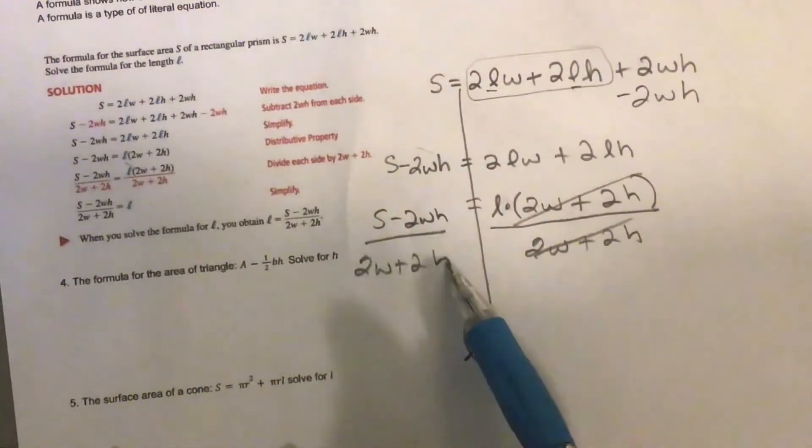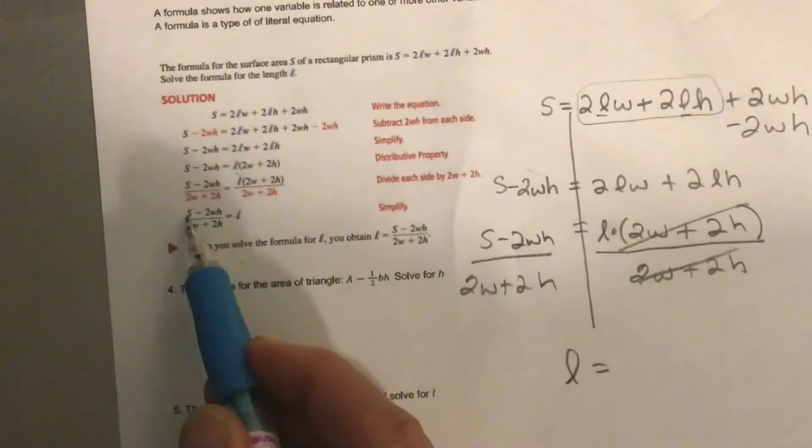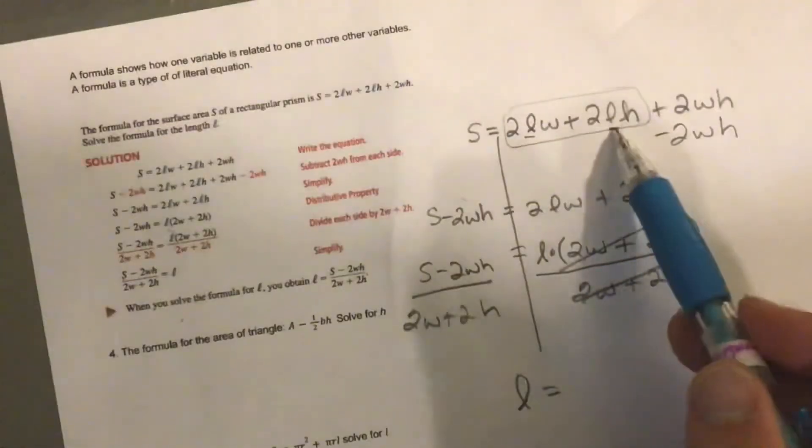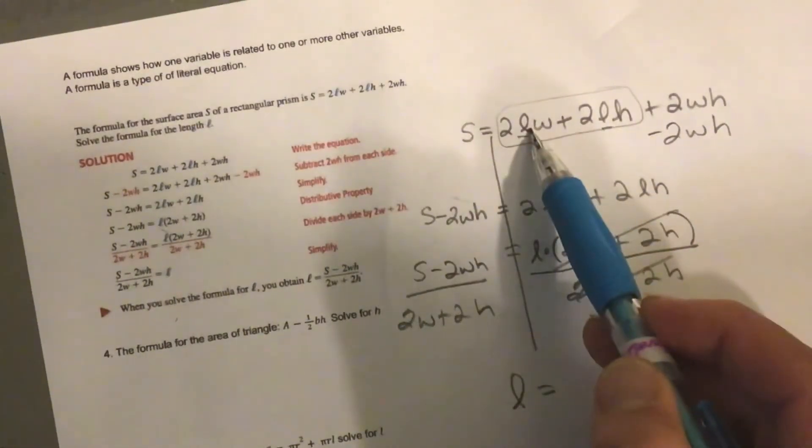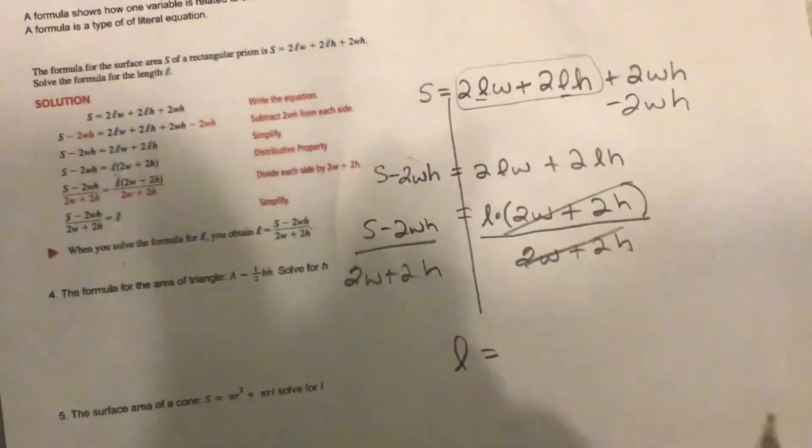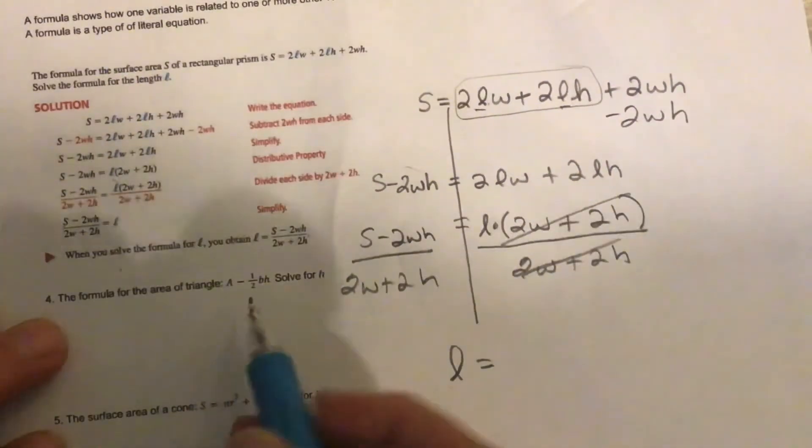In which case, then I can plug in, like, let's do here. If I know the surface area, I know the width and the height, then I can plug those in and just solve that. Otherwise, I've got to do just a little more work if I don't know the length. Because then I've got to figure out how to get those variables away. So it's a lot easier knowing how to solve for variables.